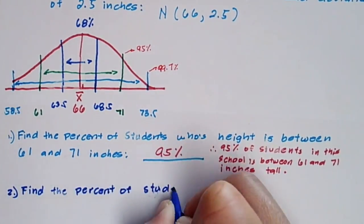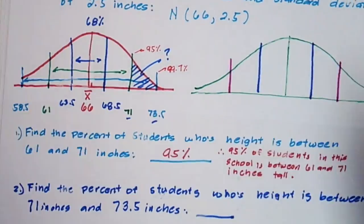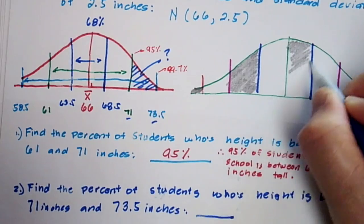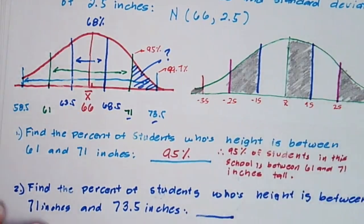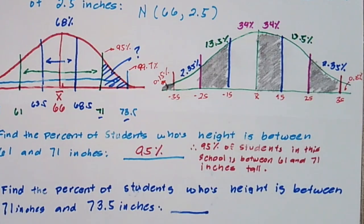What about finding the percent of students whose height is between 71 inches and 73.5 inches? In this case, let's create a modified normal curve. Within this partition, we'll have its percentages using the empirical rule.